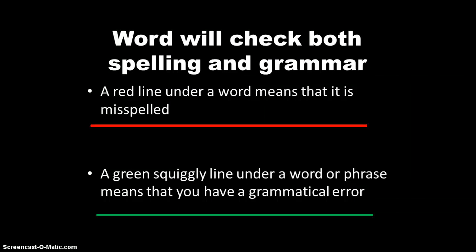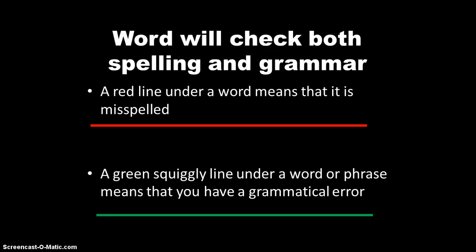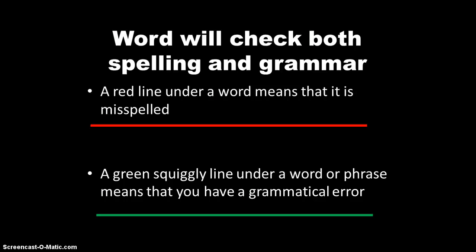When you are using Word, it will check both spelling and grammar. A red line under a word means that it is misspelled. A green squiggly line under a word or phrase means that you have a grammatical error. So maybe if you use a word twice, or if you use T-H-E-I-R instead of T-H-E-R-E, Word will usually catch that. If you say 'I has' instead of 'I have a new class,' it will catch that. Not only is this on your exam, but that is stuff you should know for writing assignments in school as well. Pay attention to those.